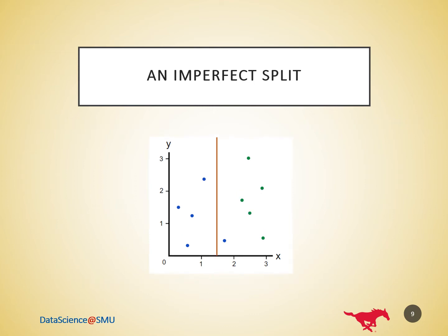Finally, let's return to our imperfect split. The left branch has only blues, so Gini impurity equals 0. The right branch has 1 blue and 5 greens, so Gini impurity equals 0.278.